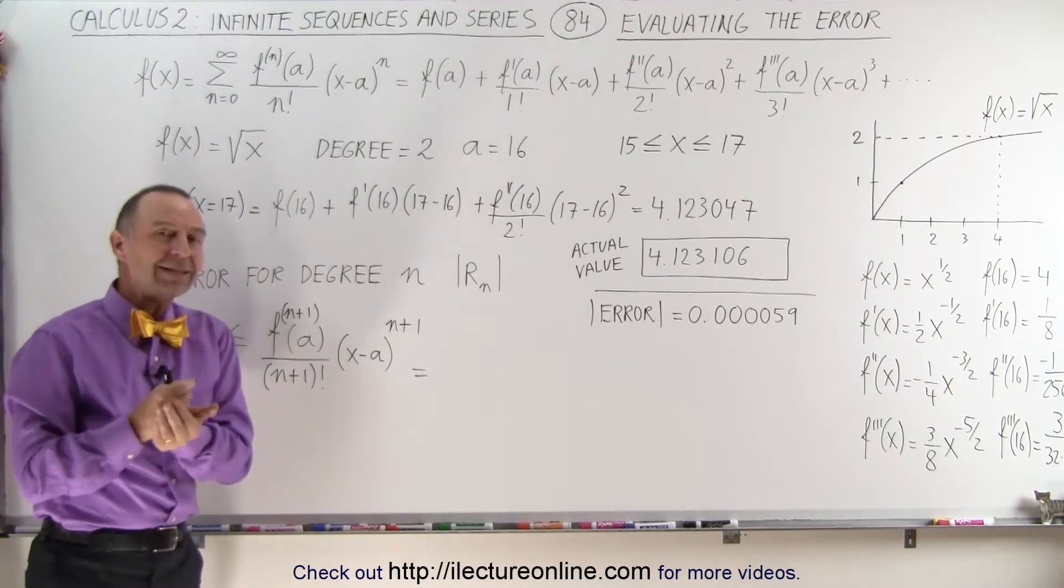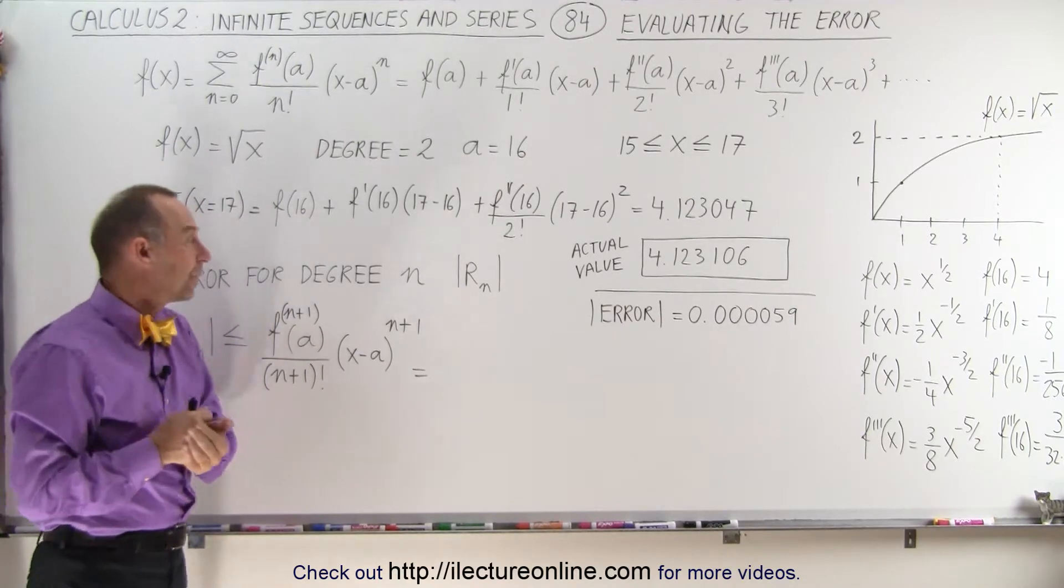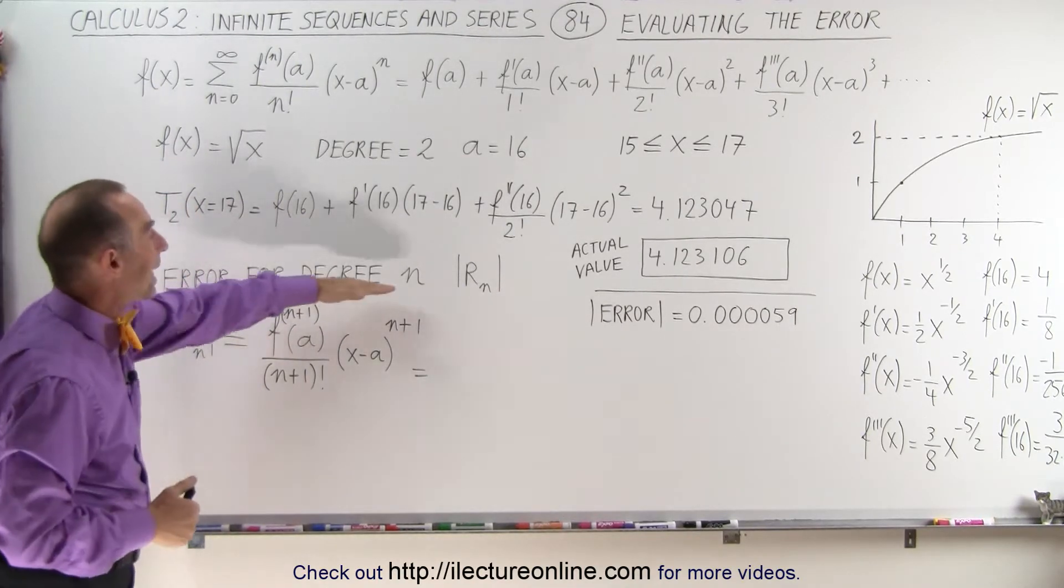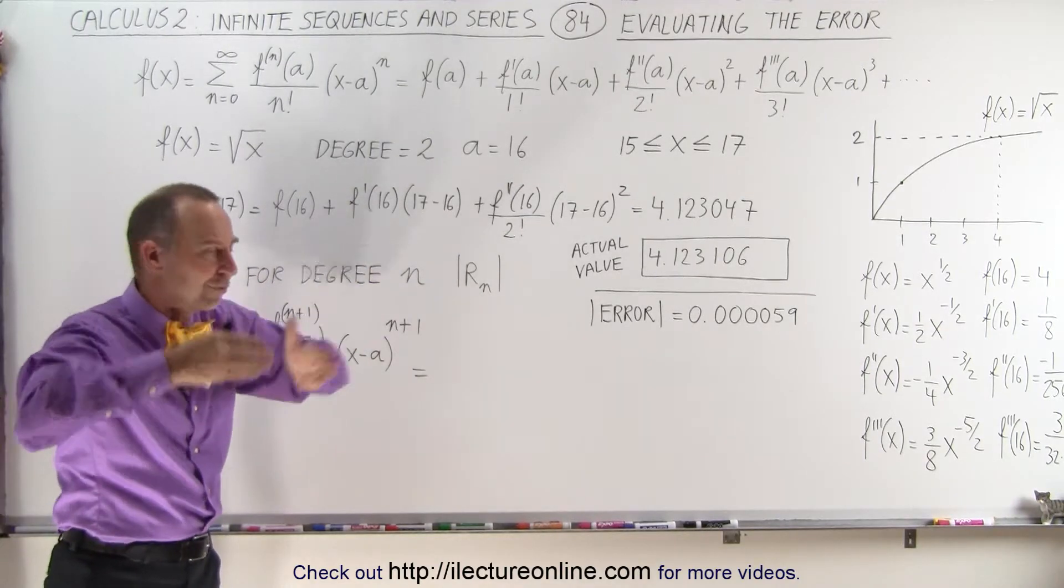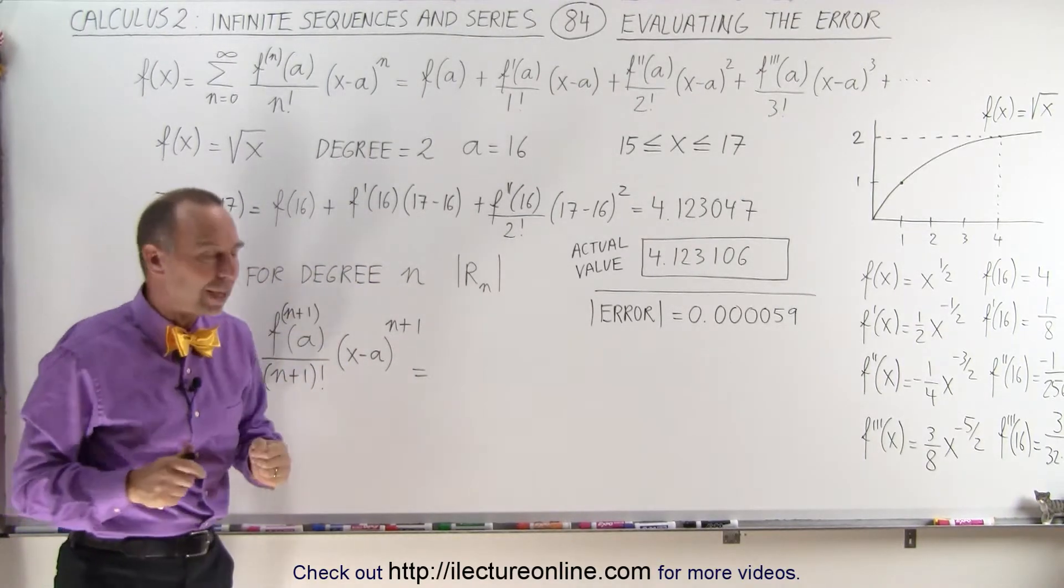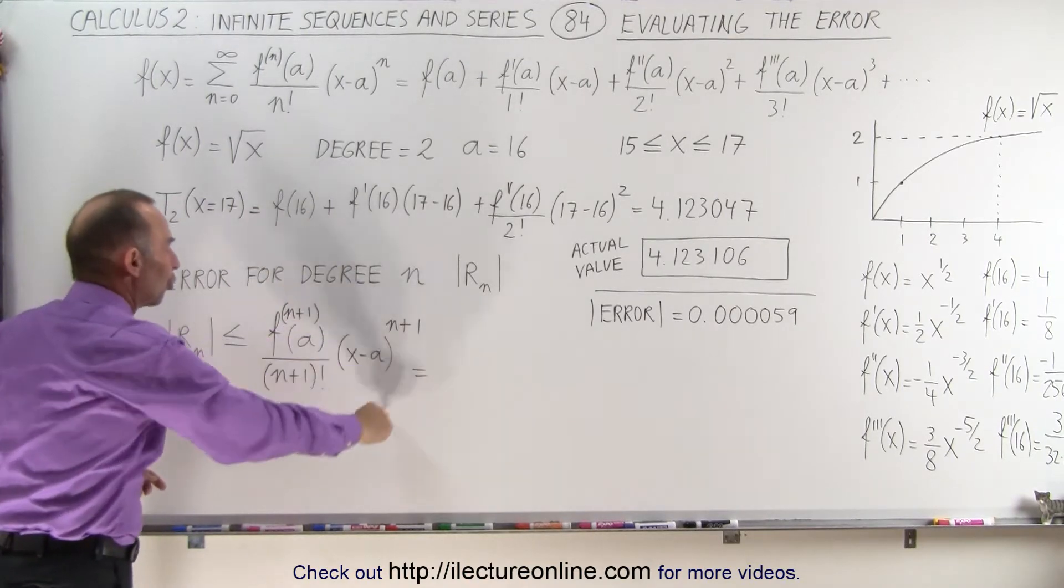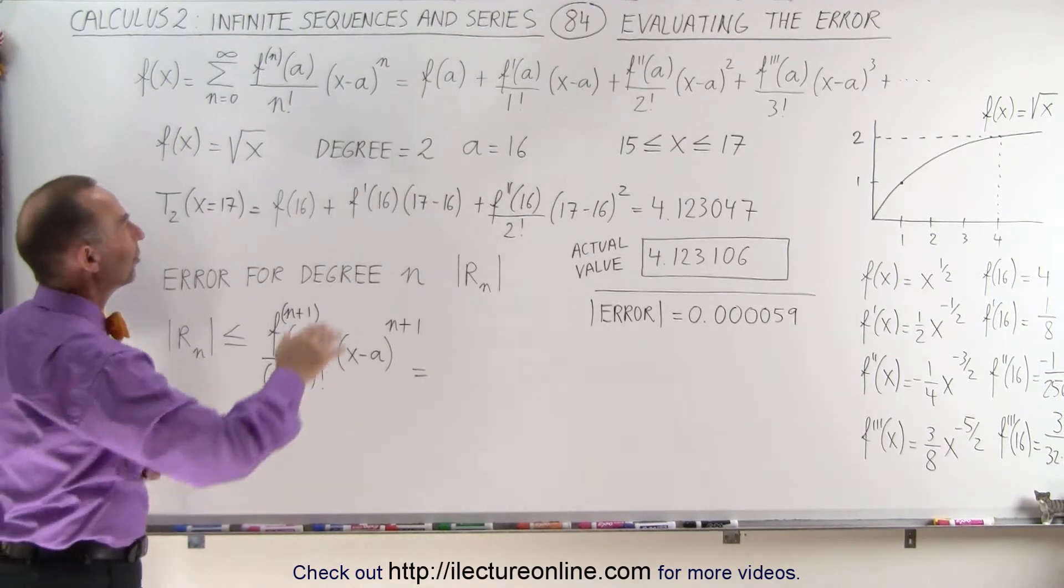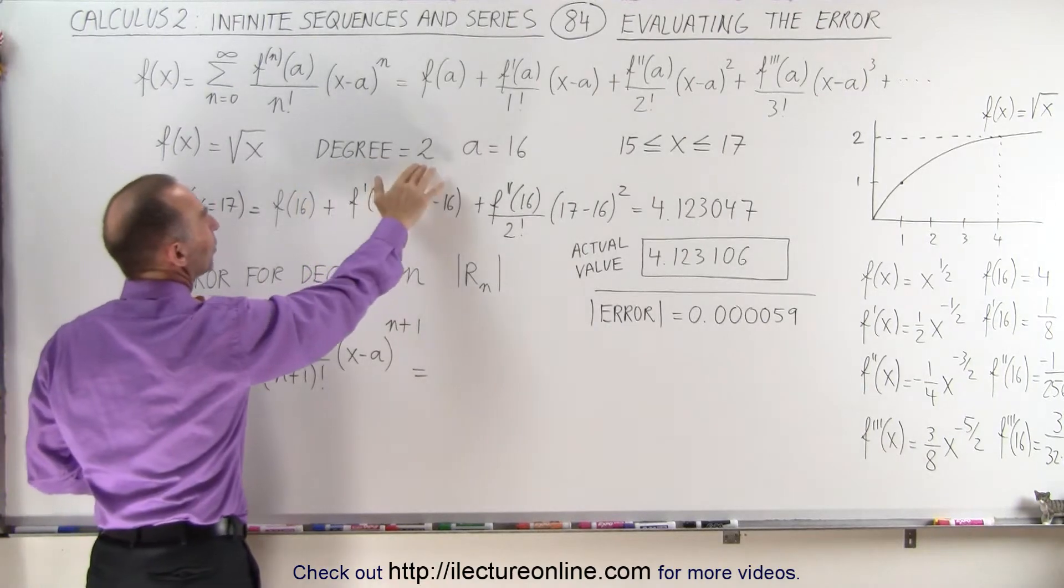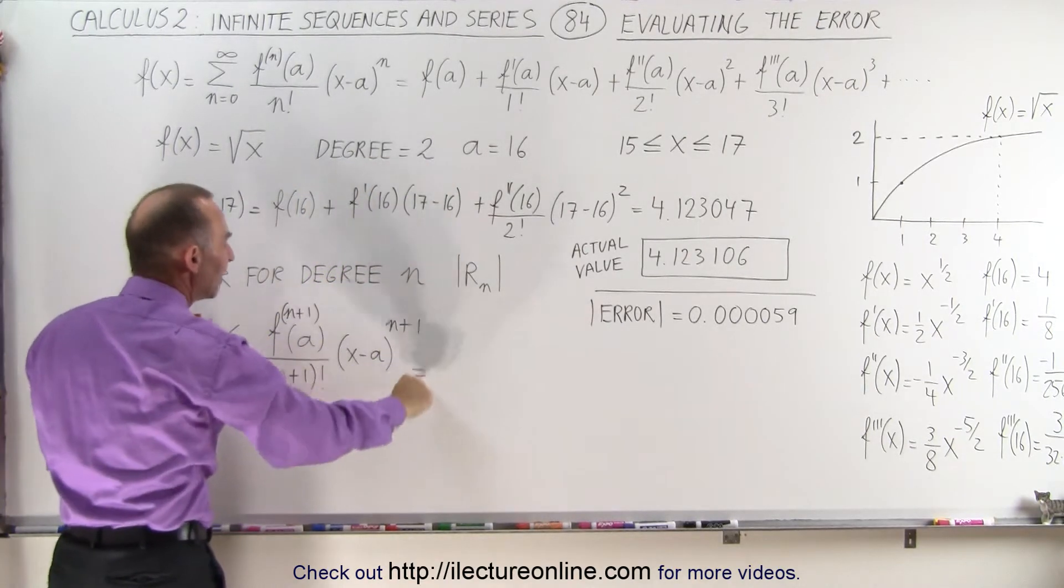We can actually calculate what the error will be. The error for degree n, let's call it R sub n, and we're taking the absolute value of it because we don't care if it's plus or minus. We can find that by evaluating the very next term in the series. So since this was evaluated to a degree two,